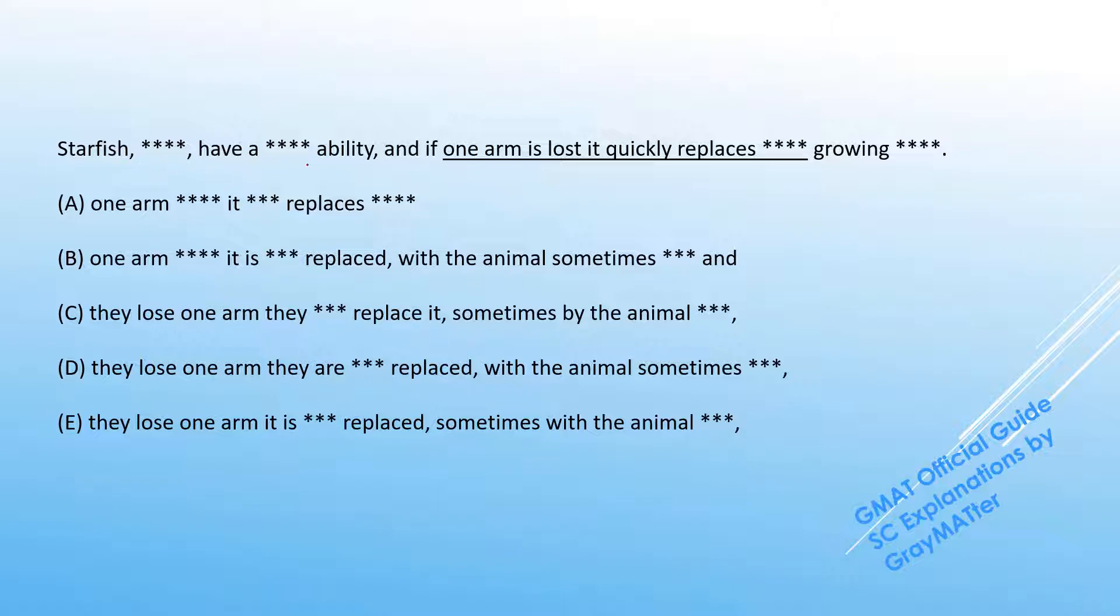The sentence reads that starfish have this ability and if one arm is lost, it quickly replaces that arm. And the first catch is this one. Now some might immediately think that this it is fine, it is referring to starfish and starfish is singular so that works because some think that fishes is the right plural form of fish. But that is entirely not the case because fishes can only be used in that form when we are actually talking about multiple species of fish.